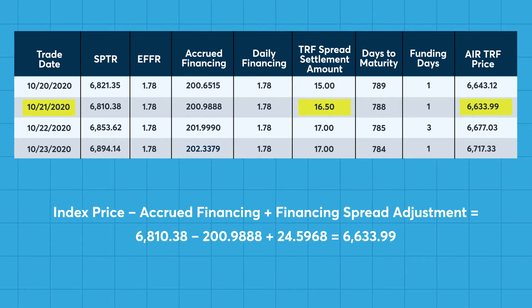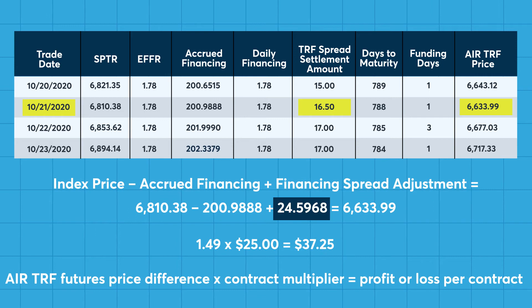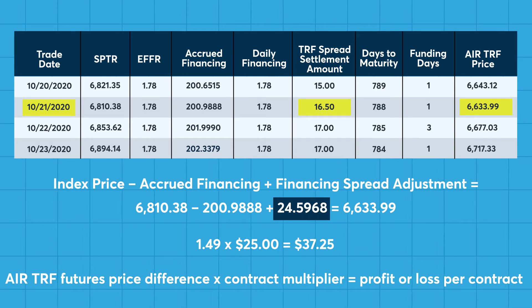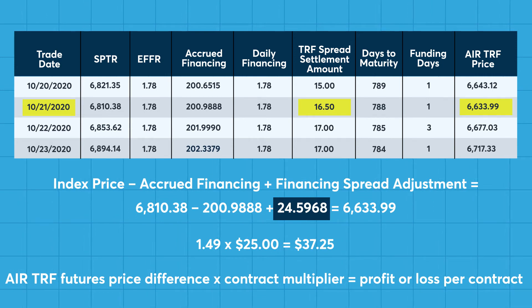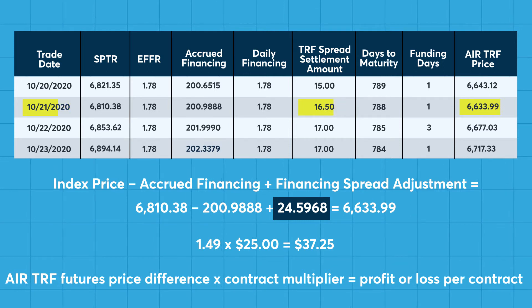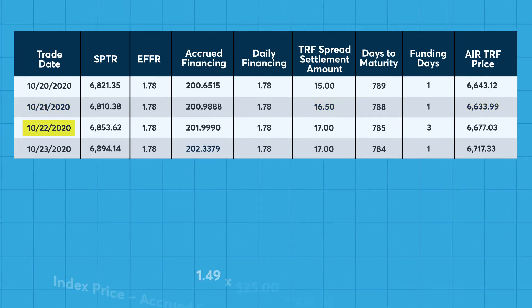This positive price difference of 1.49, when multiplied by the contract multiplier of $25, equates to a profit per contract of $37.25.